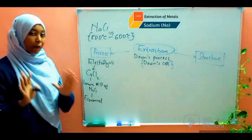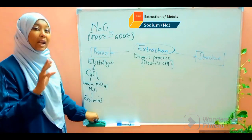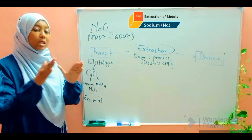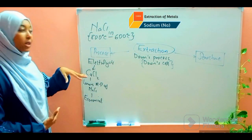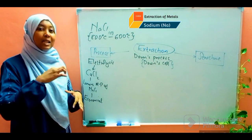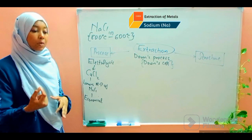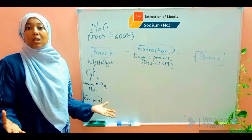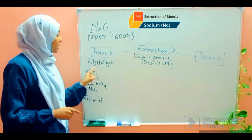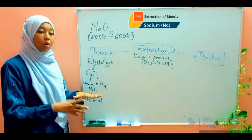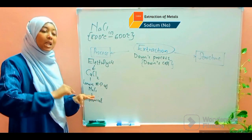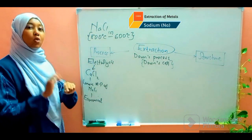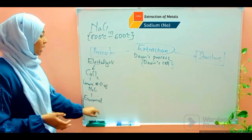Electricity is used for two purposes. Purpose number one is to melt the solid sodium chloride. But heating needs to continue throughout, because if the sodium chloride were to melt and then heating stopped, it would simply crystallize and solidify, stopping the electrolysis. So melting must happen and then continuous heating must take place to ensure that the electrolyte — sodium chloride — does not crystallize out.